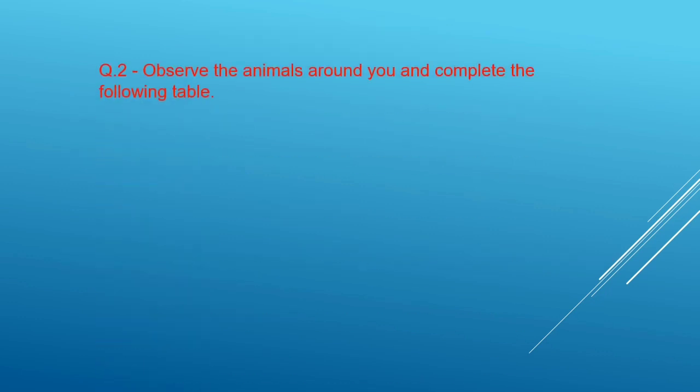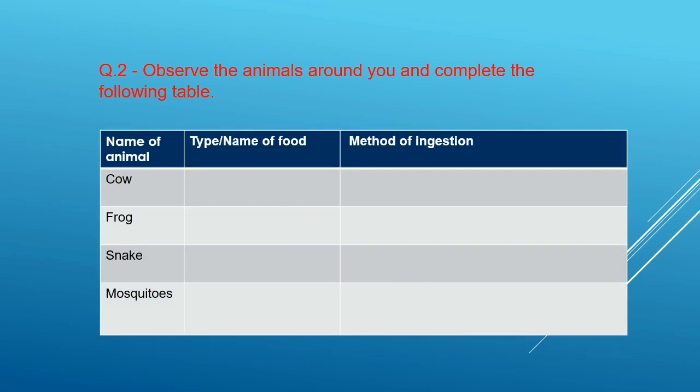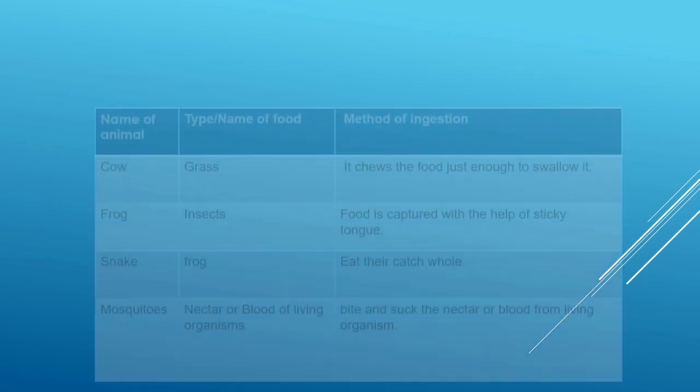Question number 2 is Observe animals around you and complete the following table. And this is the table. Do you know the food of cow, frog, snake, mosquitoes? Of course, you know that. Let's see the answer.